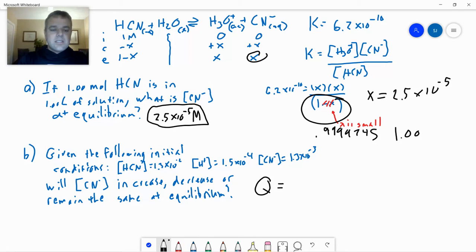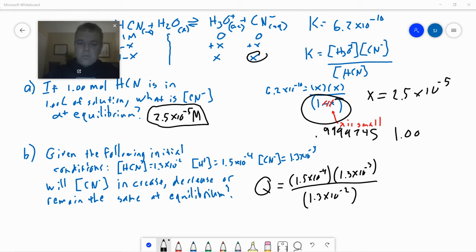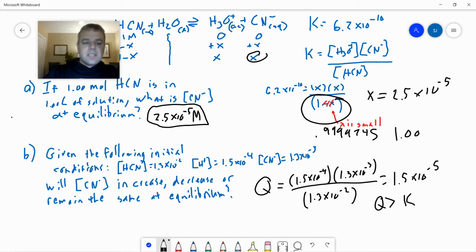And so Q equals, we're going to take the concentrations of our products. That's going to be 1.5 times 10 to the minus 4th times 1.3 times 10 to the negative 3rd divided by 1.3 times 10 to the negative 2nd. And this equals 1.5 times 10 to the negative 5th, which is a small number, but Q compared to K, Q is greater than K.